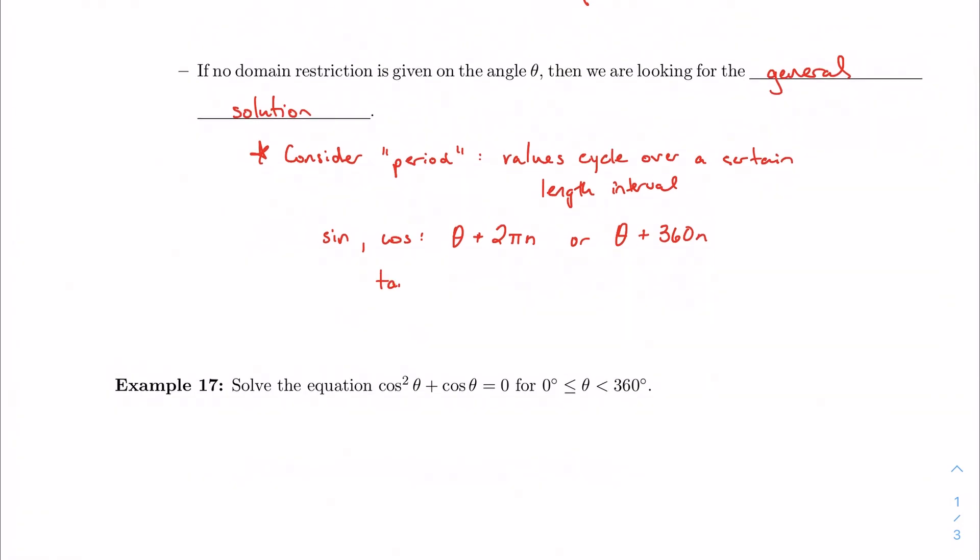For tangent, values repeat every π radians or 180 degrees. So for that, we just have to remember to tack on this little extra piece, plus πn or plus 180n, depending on what we're talking about. So if we have to deal with a general solution, if no restriction is given, I want to give all of the possible solutions. And for all of these, n is an integer.